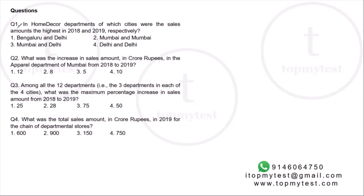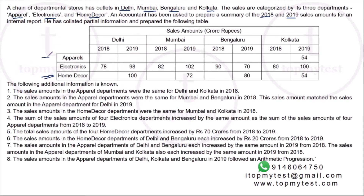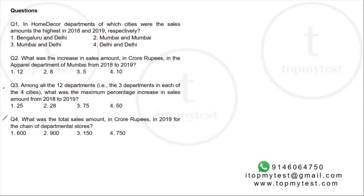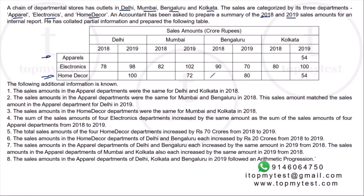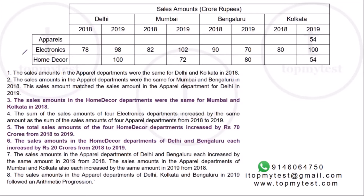Looking at the questions: the first is about home decor, the second asks for the increase in the apparel department, electronics is fully given, and the remaining two ask for greatest values across all entries. I've highlighted the home decor section because it has less missing information compared to apparel. We'll first fill up home decor, solve the first question, then fill up the apparel values and solve the rest.